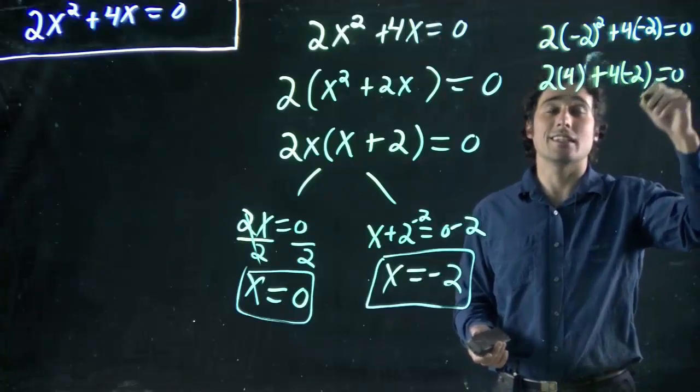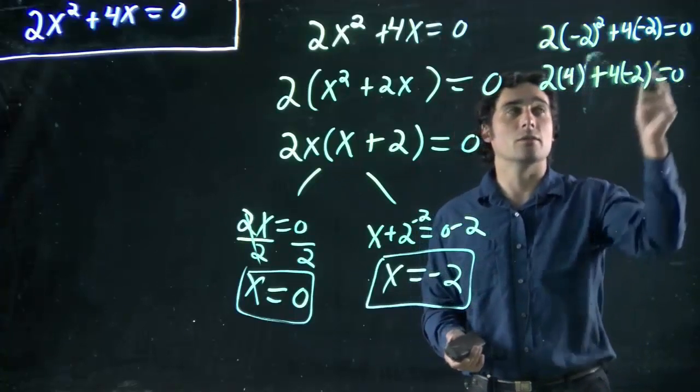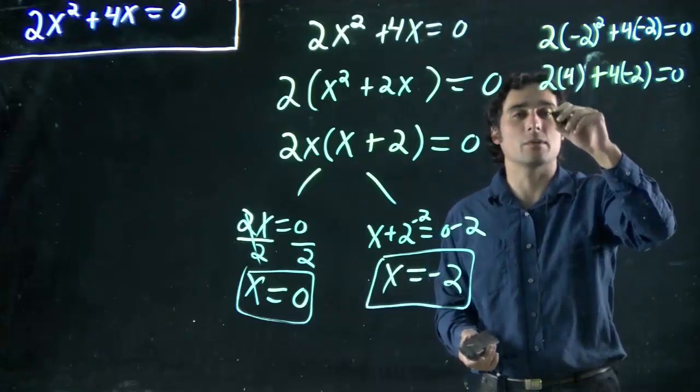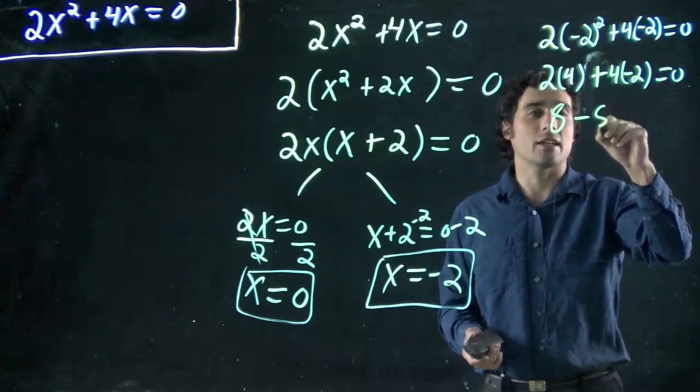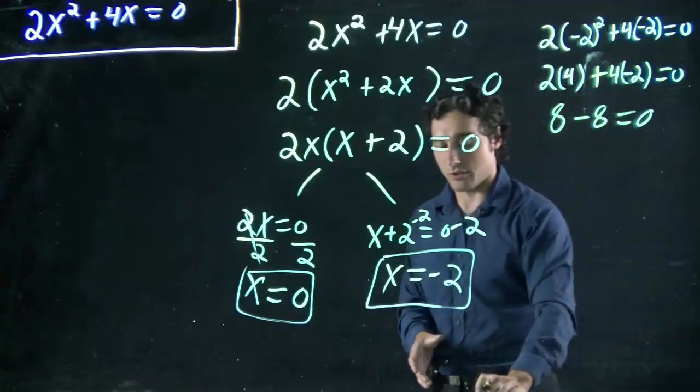So plus 4 times -2. Does it equal 0? We're going to find out. We hope so. But we get 8 and -8. Does indeed equal 0. That is indeed a solution.